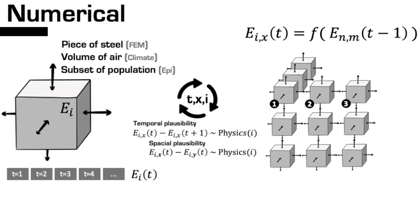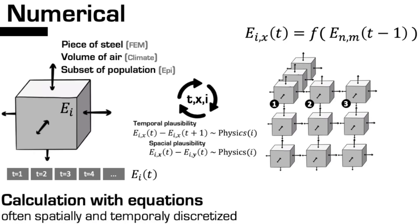There are constraints. You have to make sure that changes are plausible both in time and space. For example, if a weather forecast says at time t=1 the temperature is 20 degrees and 10 minutes later it's 10 degrees, something is probably wrong. Same for spatial plausibility — 10 degrees in Stuttgart and 20 degrees in nearby Esslingen is strange. You have to make sure the model doesn't jump in time or space, or if this is an outcome, your model is wrong. In numerical models you still calculate with equations, but these are discretized — often spatially and temporally.